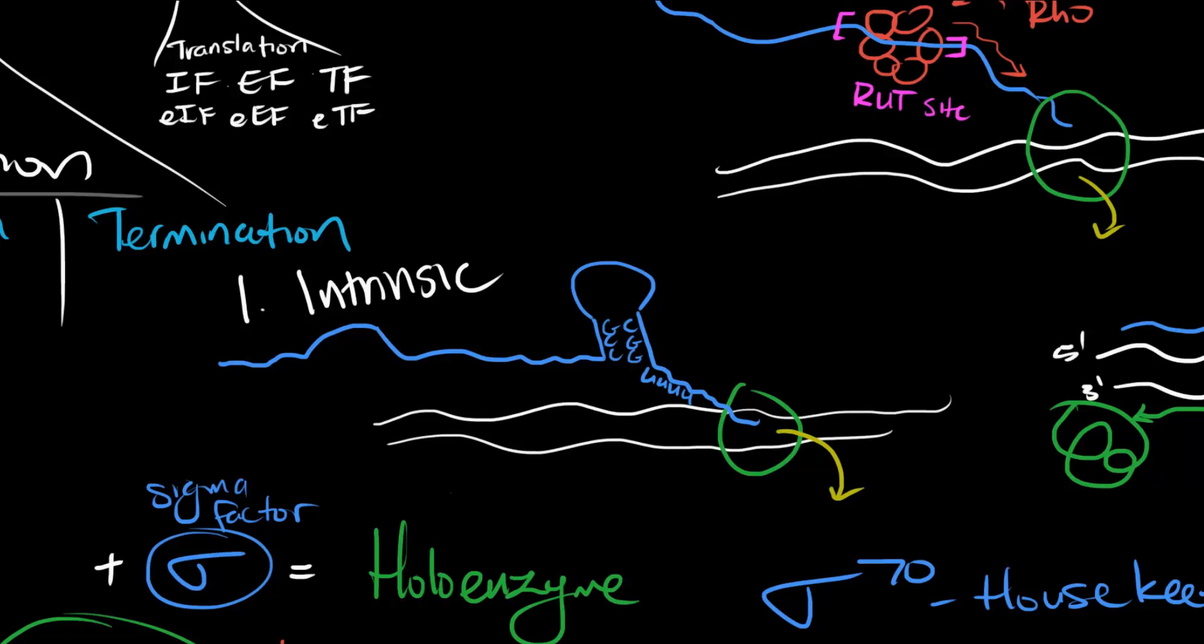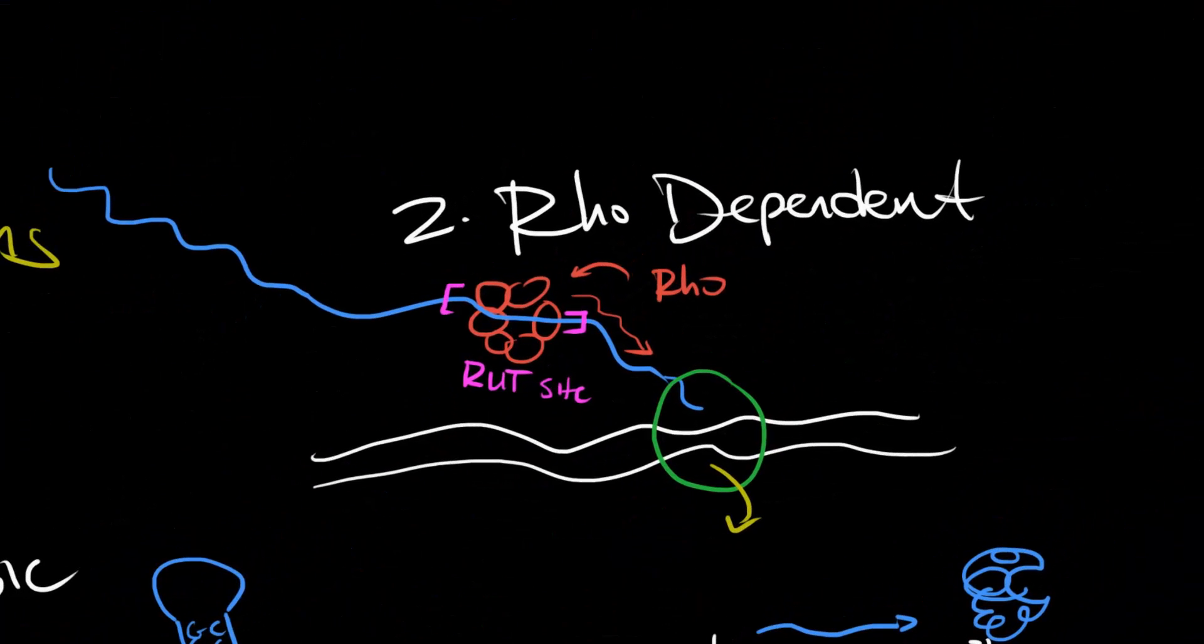For Rho-dependent termination, then, RNA polymerase needs the help of a protein called Rho to help it stop. There will be a sequence in the mRNA that is transcribed, which tells Rho to bind to the RNA. This sequence is called the RUT or RUT site. Rho is a hexamer with six identical subunits and forms the shape of a ring. After it binds to the DNA, it slides along the RNA like a ring can slide along a piece of string until it catches up to the RNA polymerase. Once it catches up, it kicks the RNA polymerase off and transcription terminates.